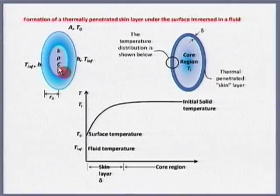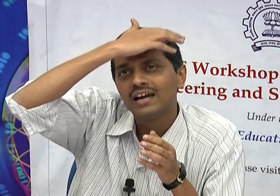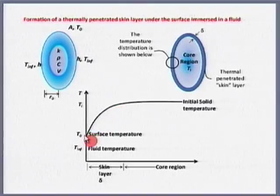Let us take the example of a boiled egg taken out of a cooker. What will happen? Only the outer layer will start to decrease in temperature. The yolk inside will perhaps not feel it — only the albumin which has been boiled will start feeling the temperature dip. So the outer layer is starting to feel the dip in temperature, but the core — the yolk region — does not know it has been taken out of the cooker into the atmosphere.